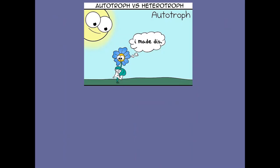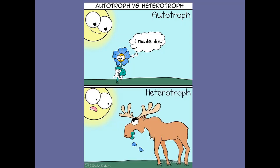Here's a little funny diagram: the sun is looking down and the plant is saying 'Look, I made this — I made sugars,' meaning it's making its own food. So the top is an autotroph making its own food, and the bottom is a heterotroph eating food.